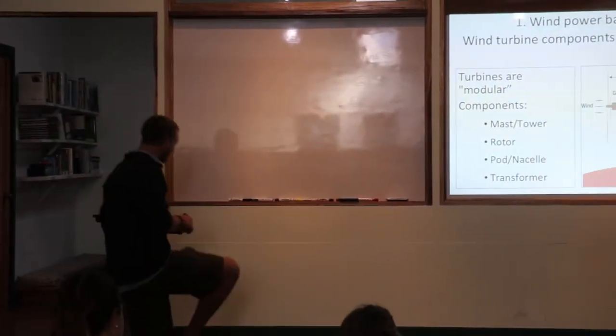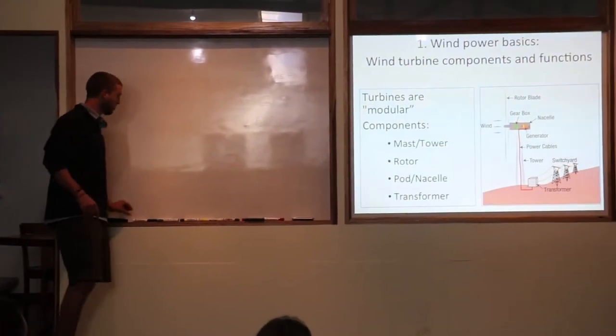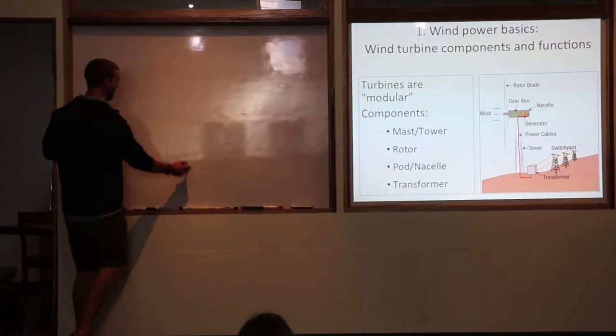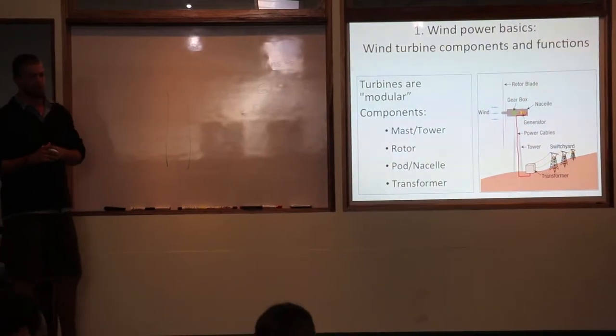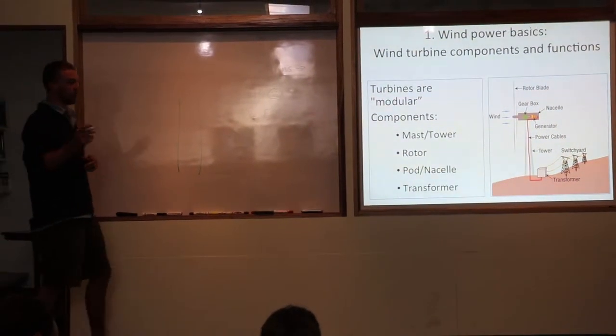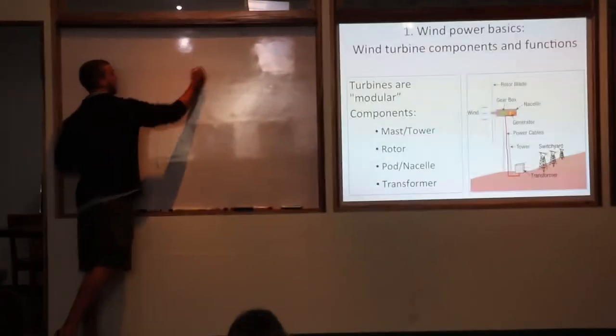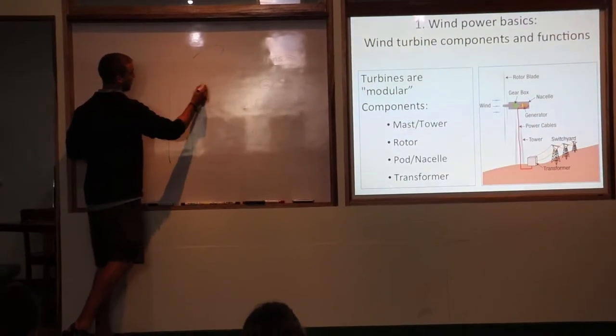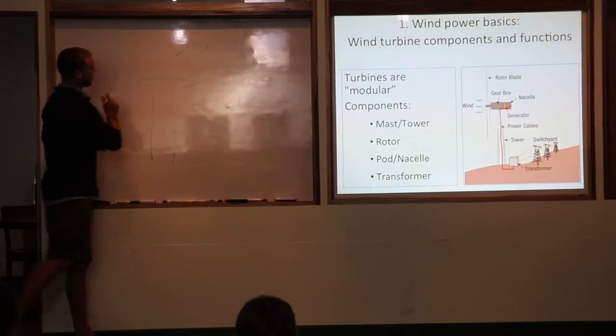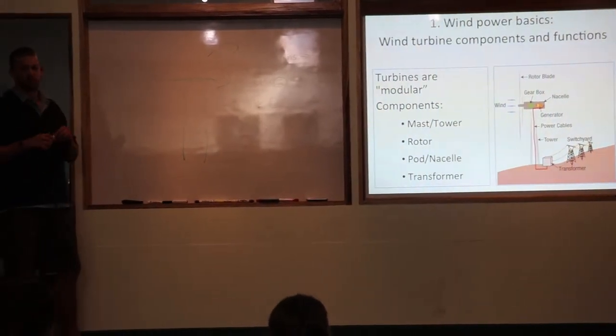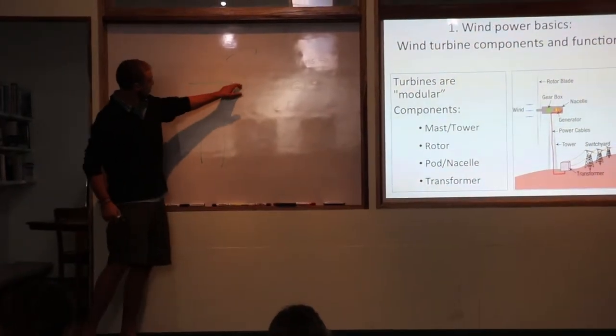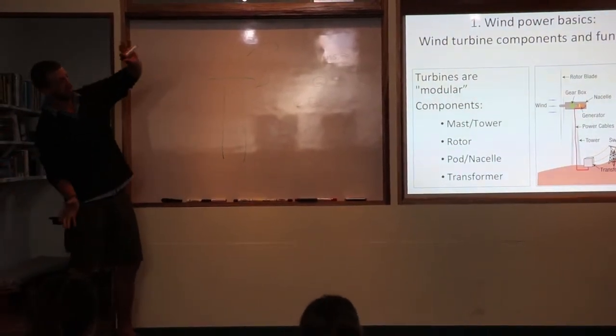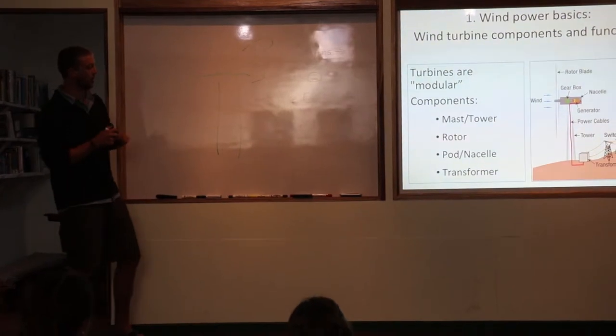I wanted to draw this because that's helped me fully understand it. So you have your mast and tower, which is just the structure here. Then you have your rotor, which consists of the blades, the nose, and this drive shaft. All of that spinning, that is the rotor.